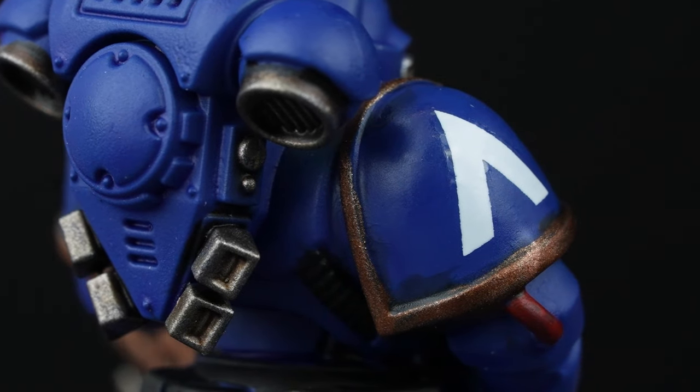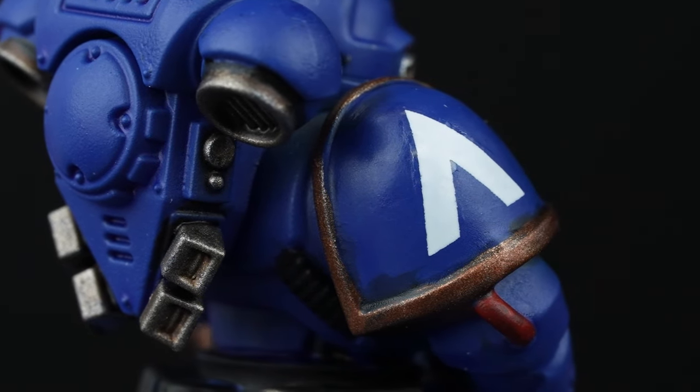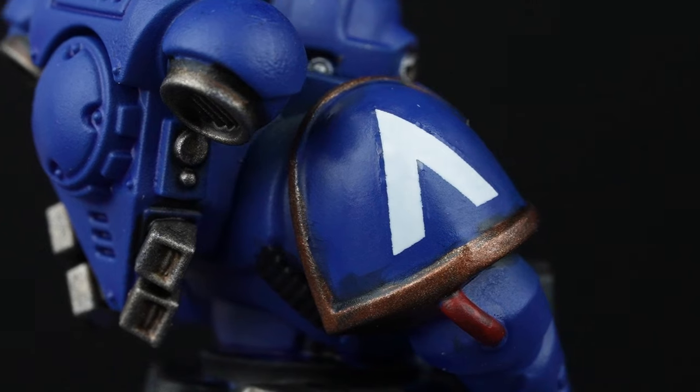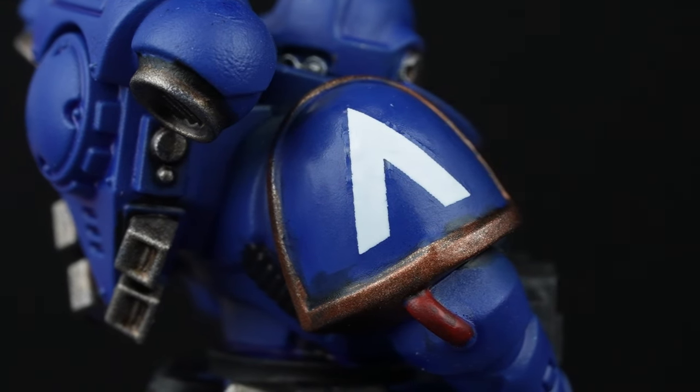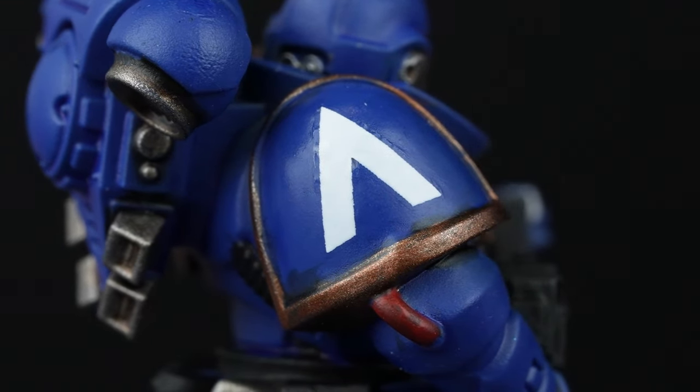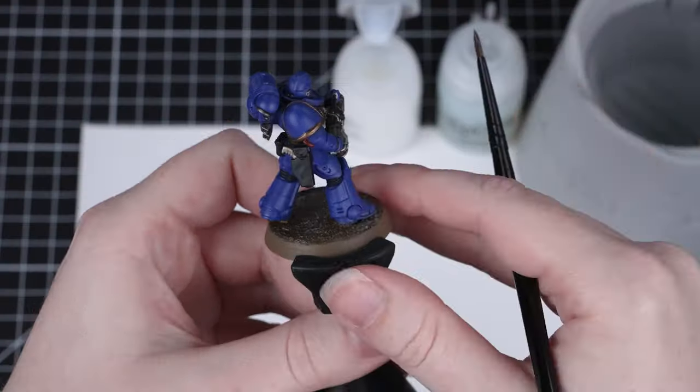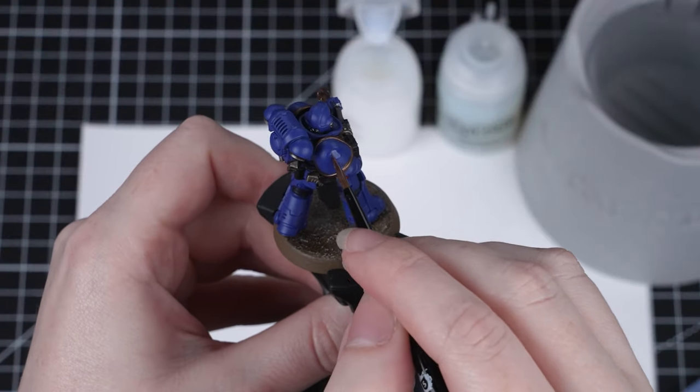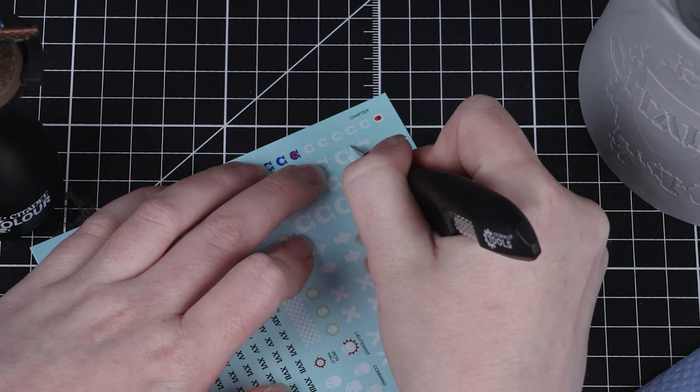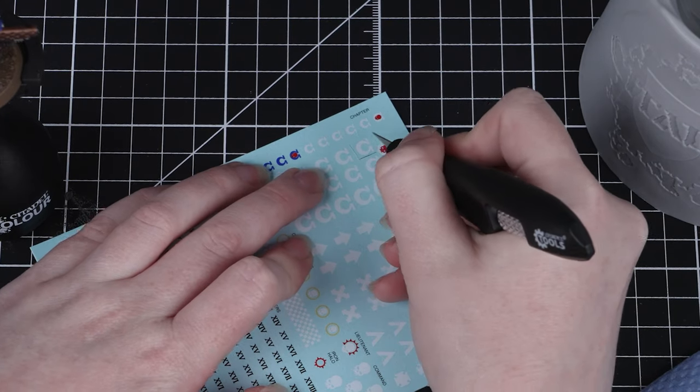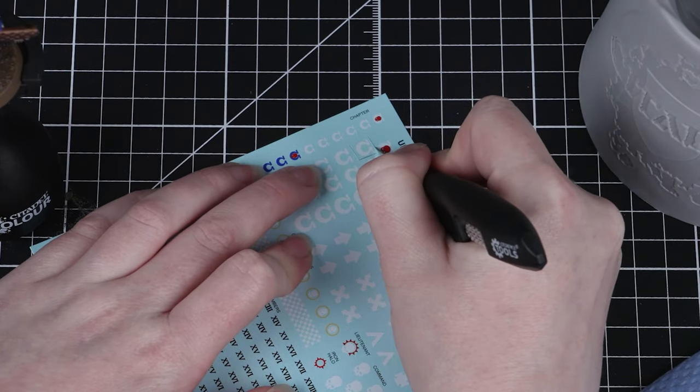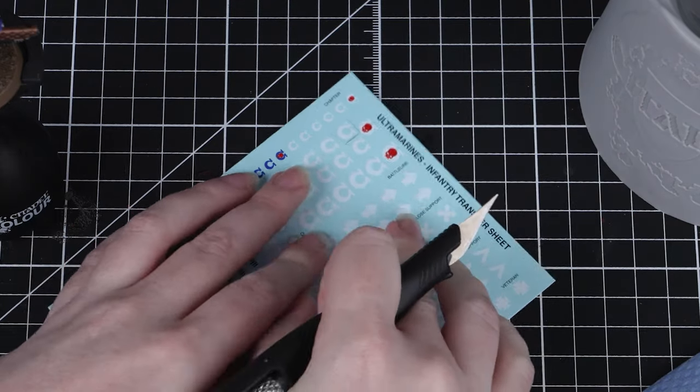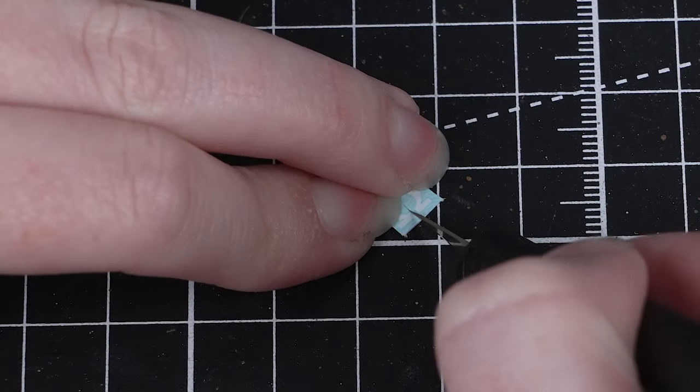Now sometimes we need to apply transfers to curved surfaces. Space Marine shoulder pads are really common examples of this. This can be a little bit trickier, however we can easily get around it. We prepare the area just like before using the Ardcoat. The only difference with applying a transfer to a curved surface is that we need to add an extra little cut into our transfer. This will help it soften around that curved surface.